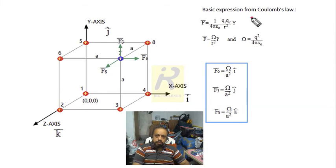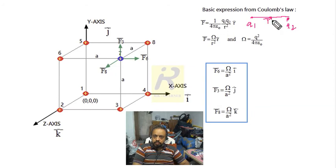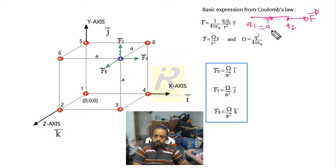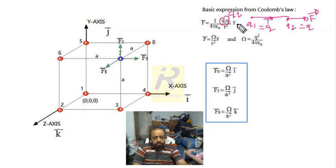If q₁ and q₂ are the two charges, the joining line gives r̂, and the force on q₁ is along that direction. Since q₁ = q₂ = q, the product q₁q₂ becomes q². So the force expression contains q².